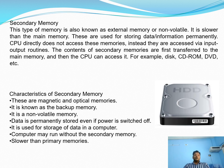Examples of secondary memory include magnetic disk, tape drive, CD-ROM, DVD, pen drive, hard disk, and other storage devices. These are magnetic and optical memories, also known as backup memory. It is non-volatile and a permanent storage device — data is permanently stored even if power is switched off. A computer may run without secondary memory, relying on primary memory (main memory).